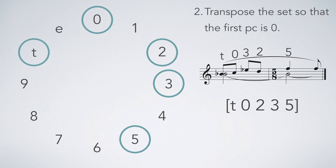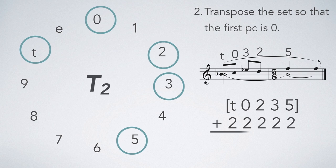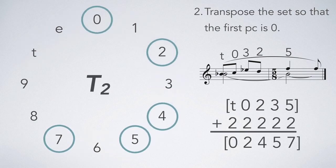Next, we must transpose the set so that it begins with zero. To transpose 10 to zero, we should use the operation T2. Okay, so this might be the prime form of our set. But it might not.